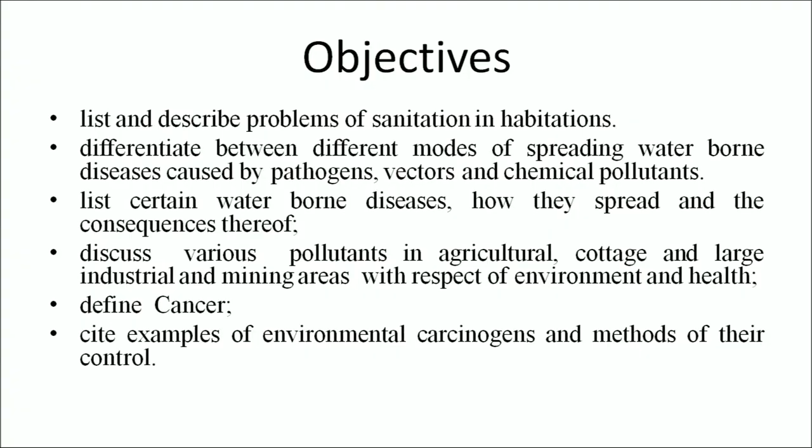During this program we will discuss how the deteriorating environment can affect our health and well-being. The objectives for this lesson are: list and describe problems of sanitation and habitation; differentiate between different modes of spreading waterborne diseases caused by pathogens, vectors and chemical pollutants; list certain vector-borne diseases, how they spread and the consequences thereof; discuss various pollutants in agriculture, cottage and large industries and mining areas with respect to environment and health; define cancer; and cite examples of environmental carcinogens and methods for their control.